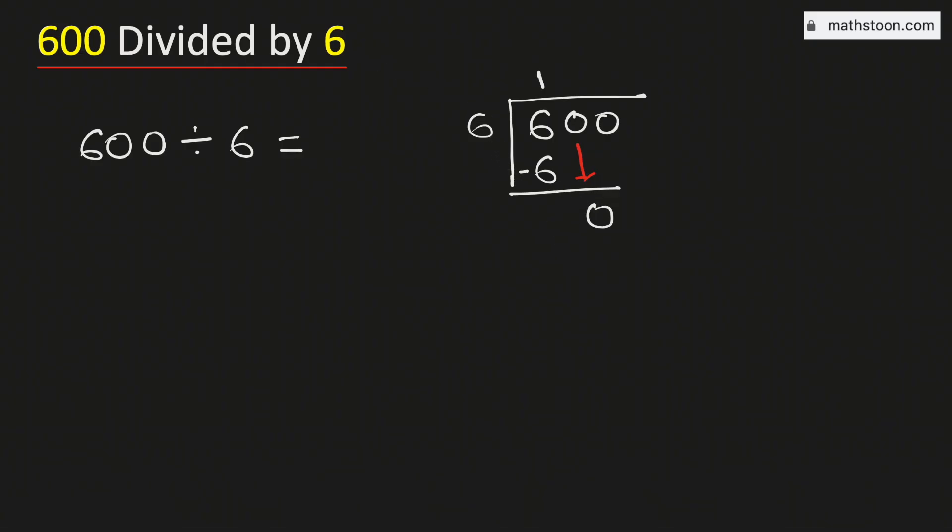As we have brought down this number 0 here, so we will divide it. And we know that 6 times 0 is 0, subtract we get 0.